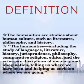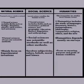To sum up: we have discussed the definitions of three major branches of knowledge. Natural science studies natural events; social science studies human society; and humanities are studies about human culture. Natural science includes fields such as biology, chemistry, physics, earth science, and astronomy. Social science includes economics, political science, law, geography, education, history, linguistics, and anthropology. Humanities includes language, literature, history, jurisprudence, philosophy, comparative religion, ethics, and arts.